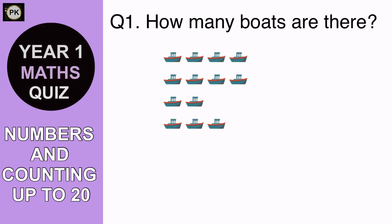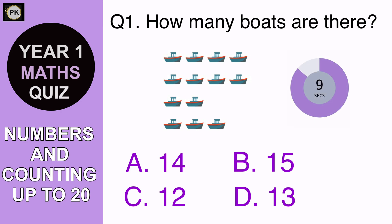How many boats are there? A. 14, B. 15, C. 12 or D. 13? And the answer is D. 13.